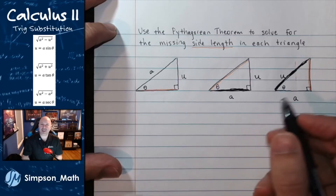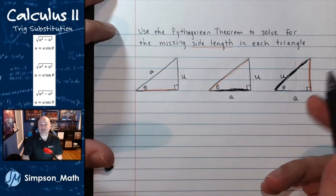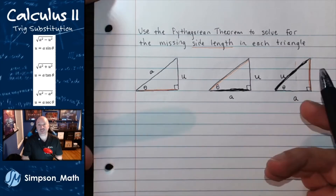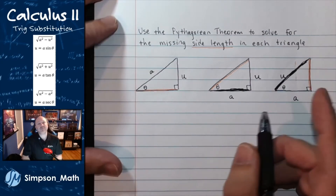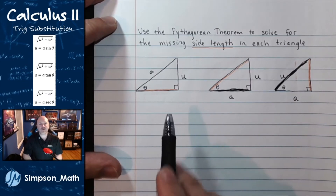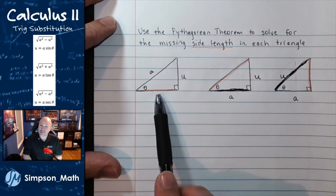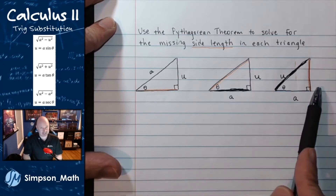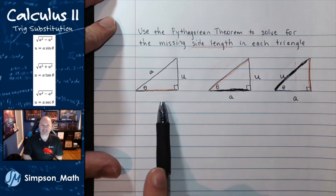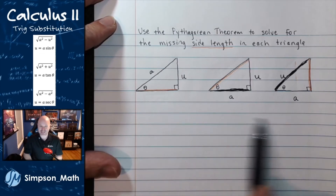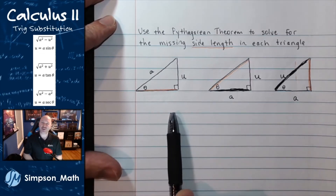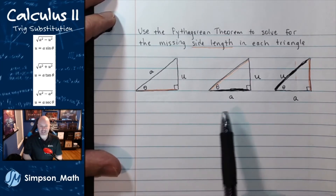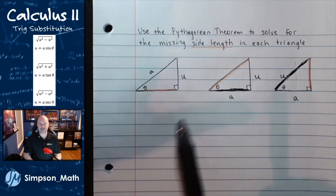Johnny here with Simpson Math, and in this video we will be introducing and covering trig substitution for integration. But before I get into some examples, I would like you to use the Pythagorean theorem to find the three missing side lengths of these three triangles. I promise I have a reason for this — I need you to go through the motions and find those missing side lengths. Pause the video and go.